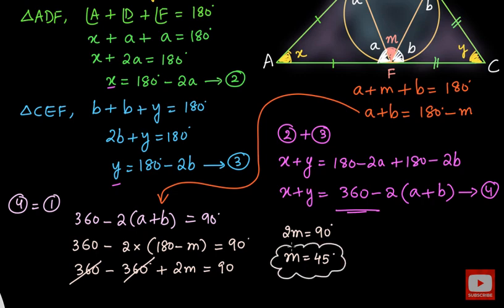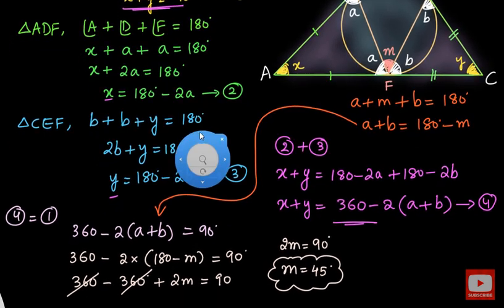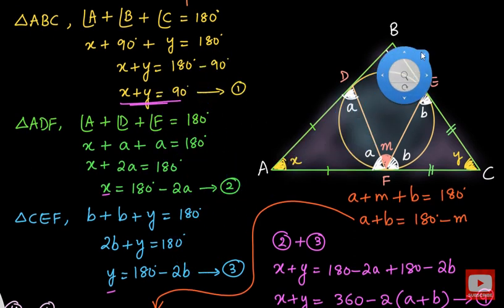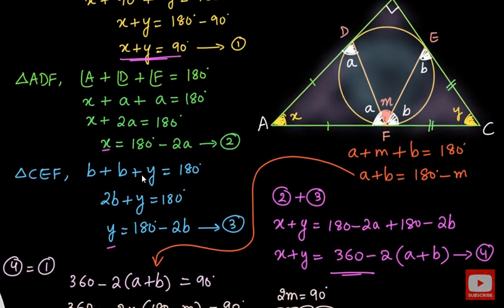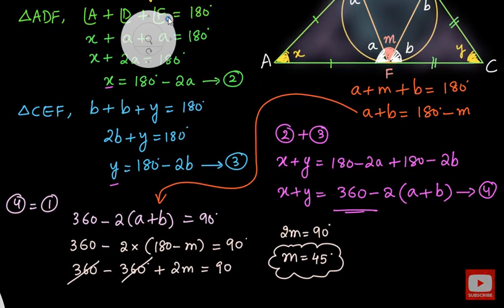So this is where we can stop — the value of angle M in the figure is 45 degrees. To summarize: we applied the angle sum property to triangle ABC, then to triangles ADF and CEF, manipulated the results, and got an equation in terms of M which we solved easily. I hope all of you enjoyed the video. For more such interesting videos, kindly subscribe to my channel and keep watching. I will see you all in the next video.